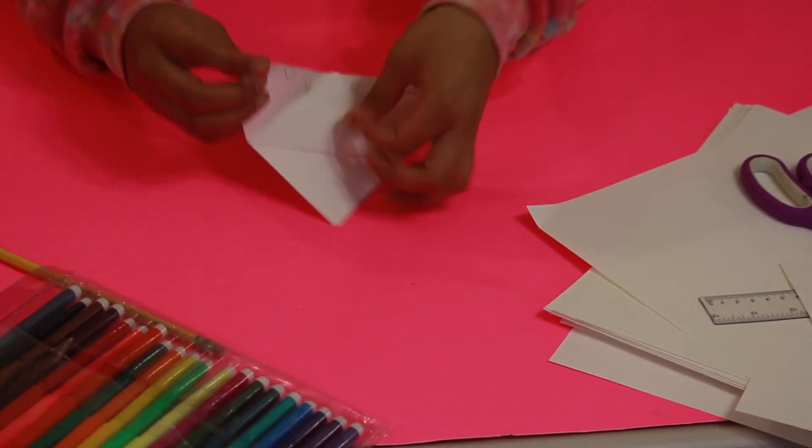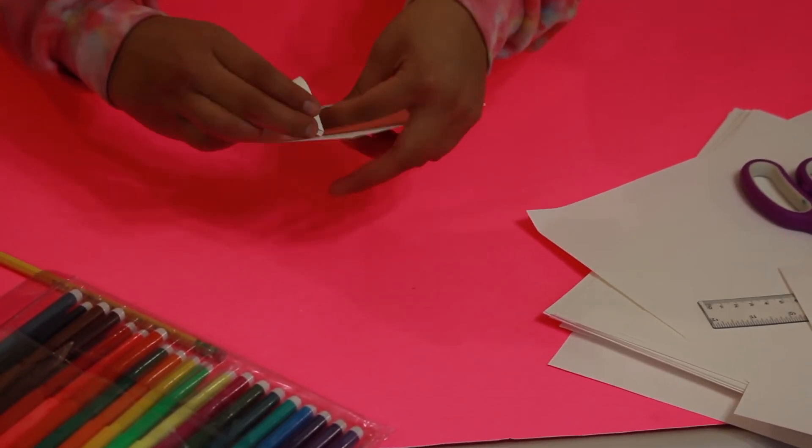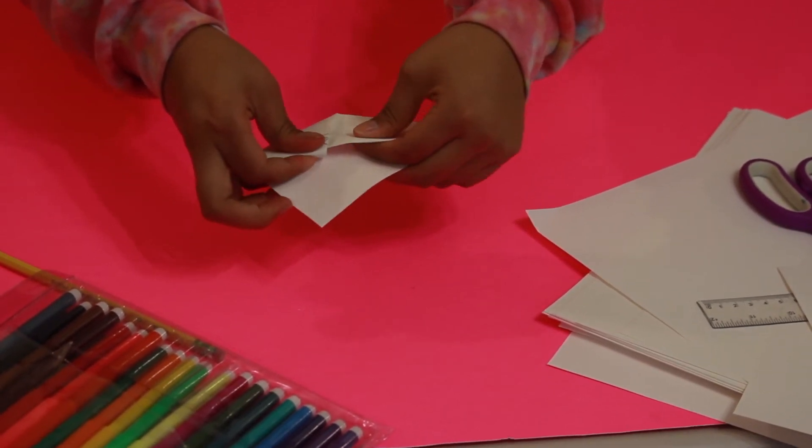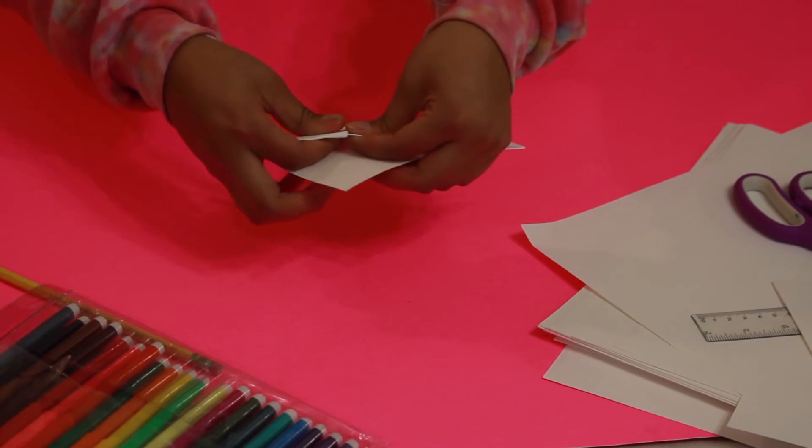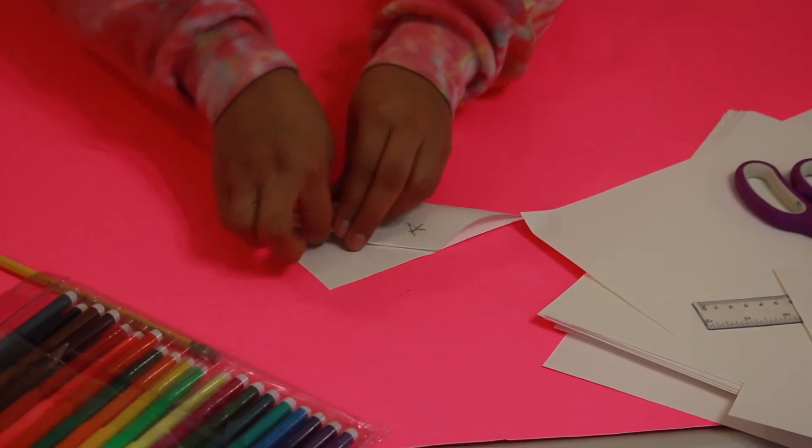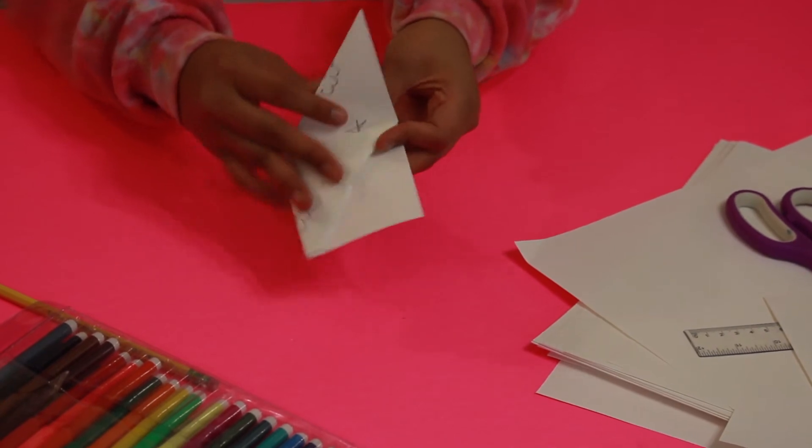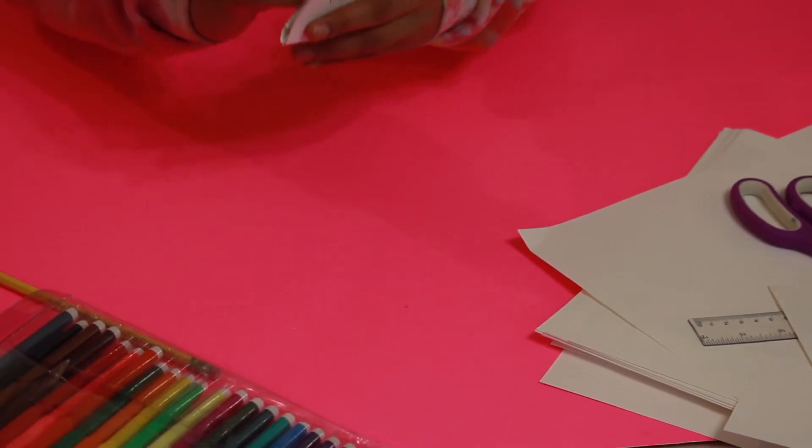Alright, now that we're done with that we're going to bring our right side and fold it in. You're tucking it in inside the fold. Make sure again that it's lined up as best as possible. And we're going to do the same thing with the other side. We're tucking it in.